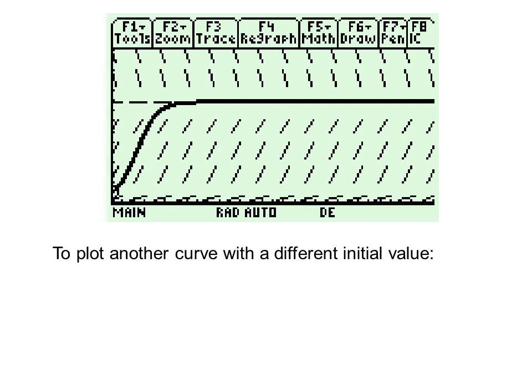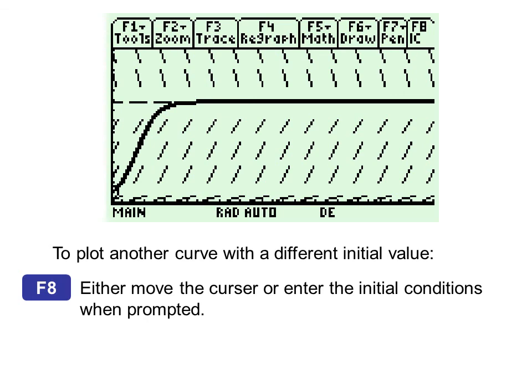To plot another curve with a different initial value, press F8 and either move the cursor or enter the initial conditions when prompted. Note F8 is shown up here in the pull-down menu. IC stands for initial conditions.